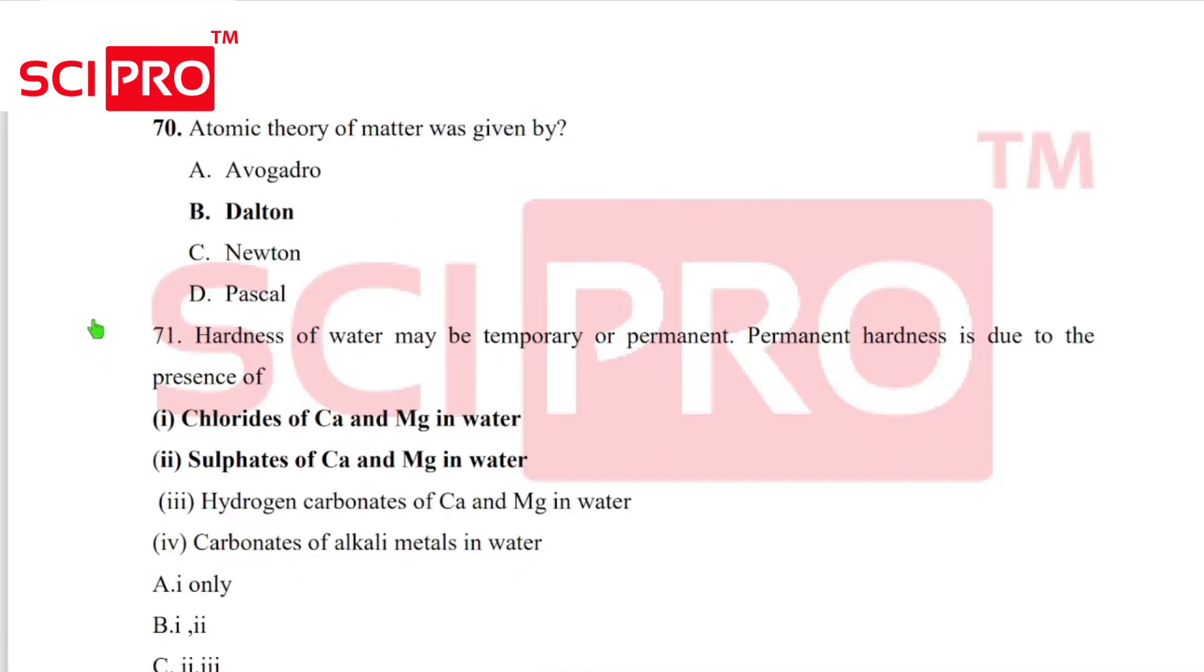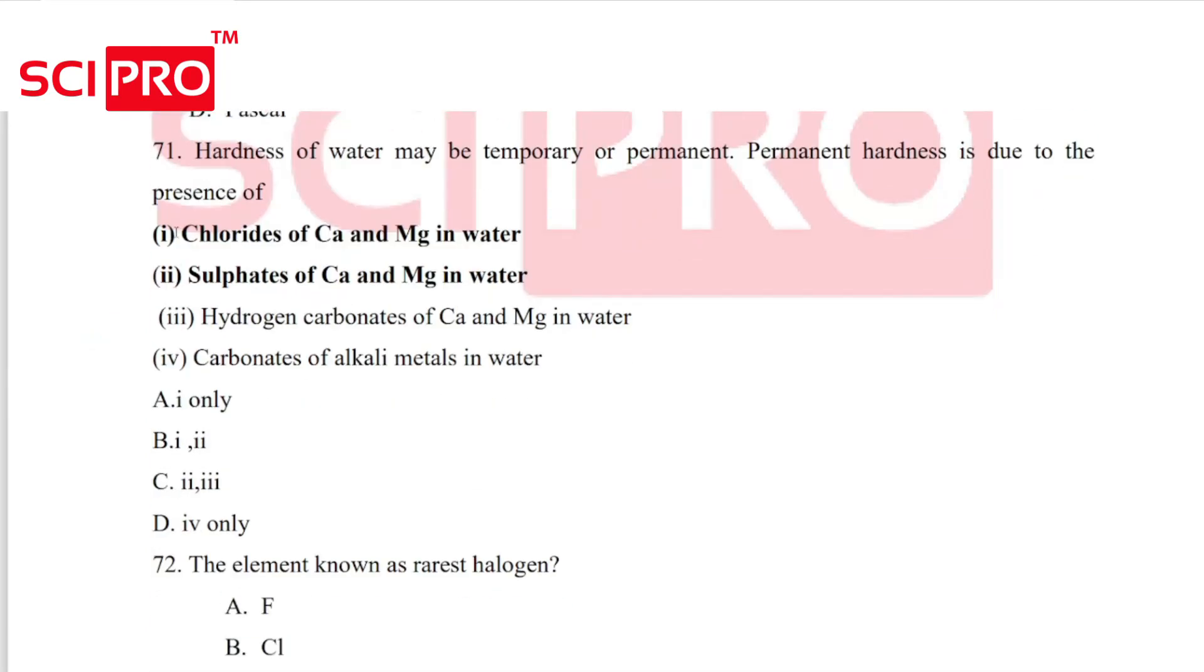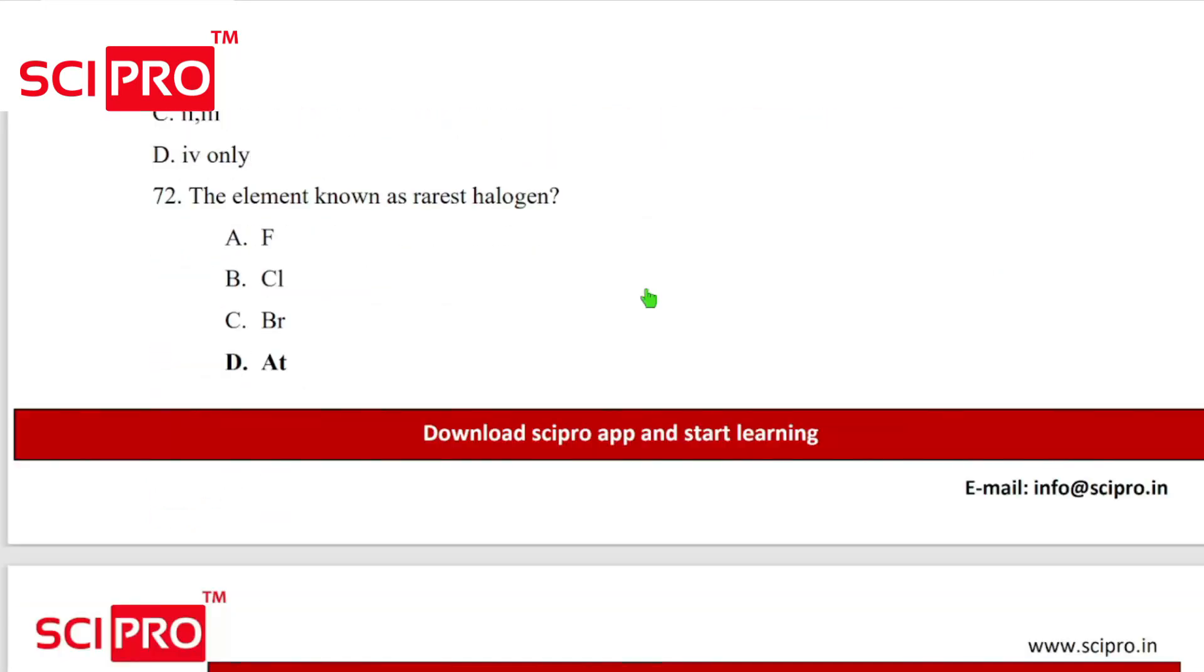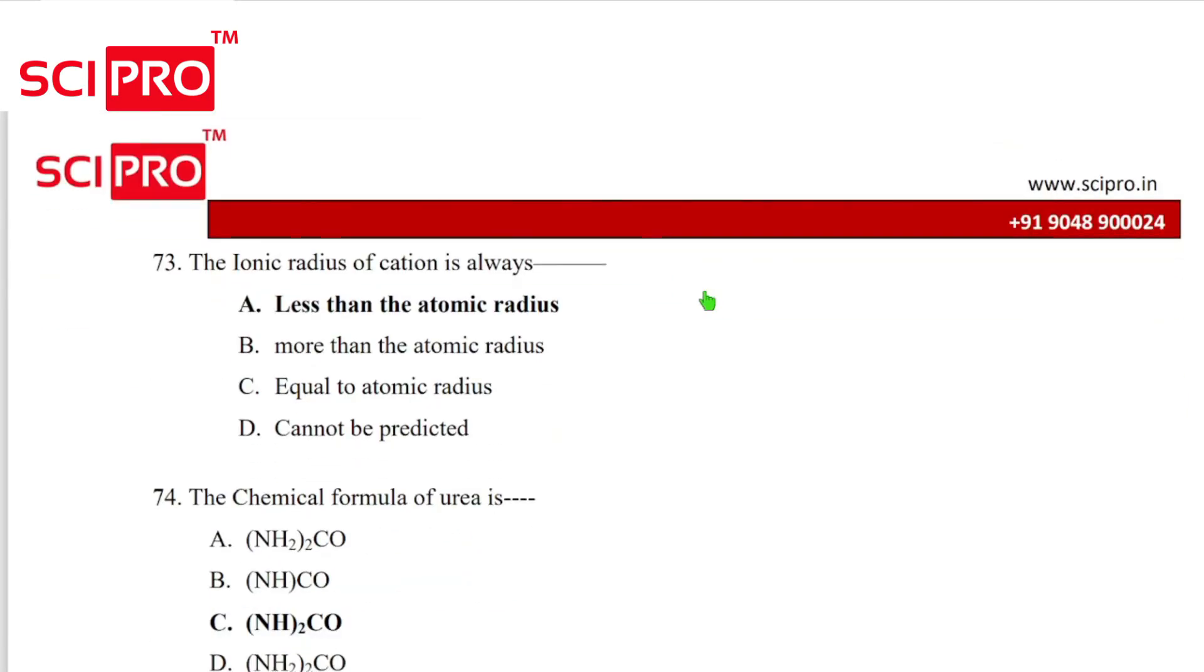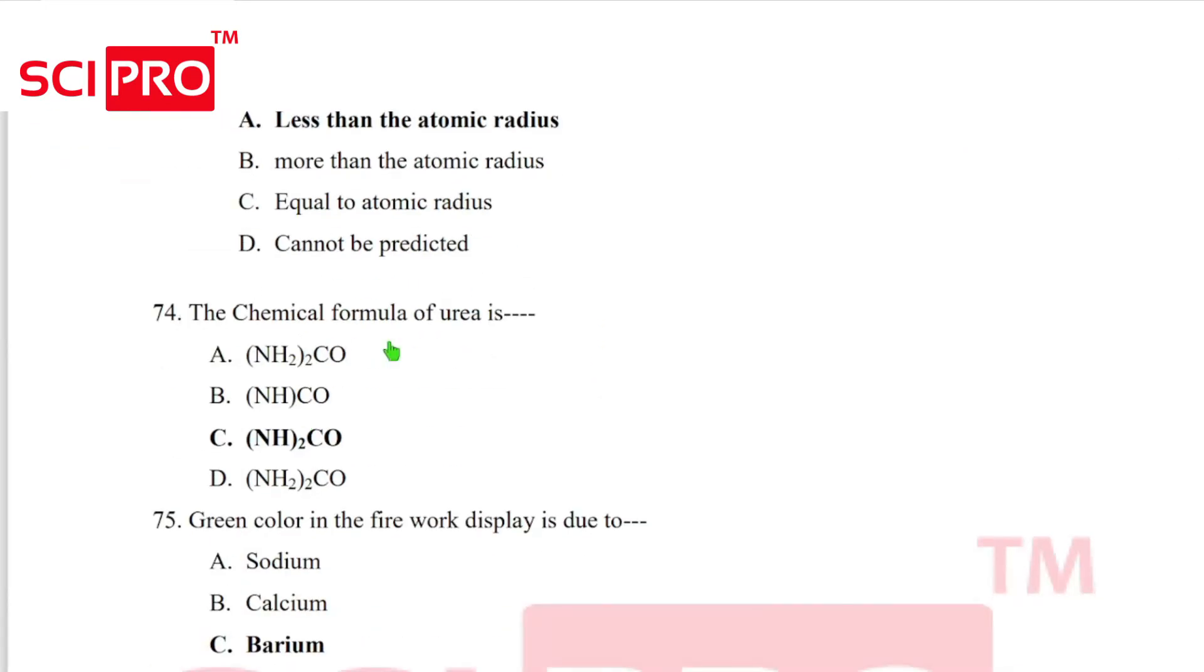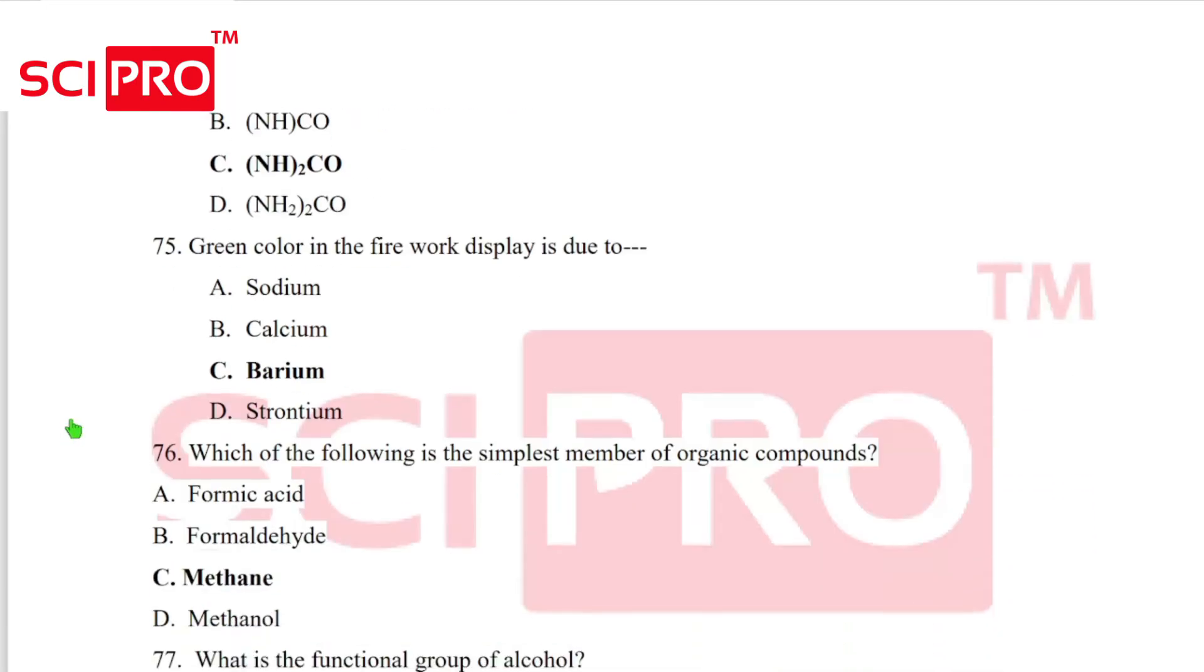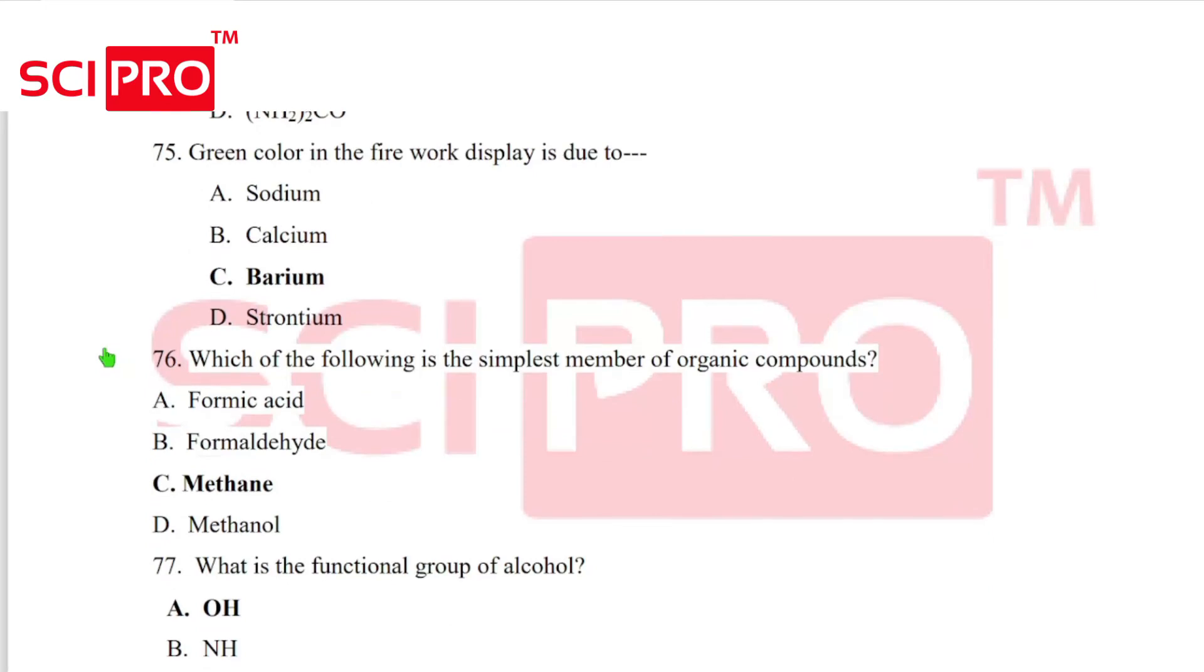Question number 71, the hardness of water may be temporary or permanent. Permanent hardness is due to answer B. That is chlorides of calcium and magnesium in water and sulphates of calcium and magnesium in water. Question number 72, the element known as rarest halogen, astatine. Question number 73, the ionic radius of cation is always less than the atomic radius. Question number 74, the chemical formula of urea. Answer C.